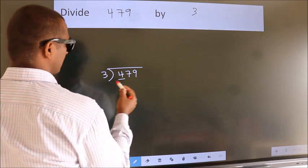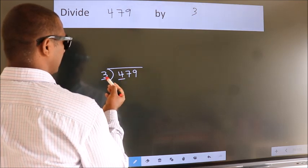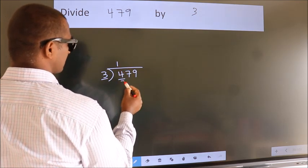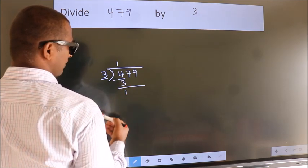Here we have 4, here 3. A number close to 4 in 3 table is 3 1s 3. Now we should subtract. We get 1.